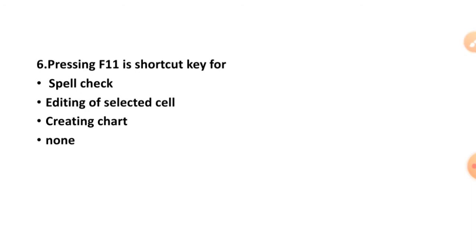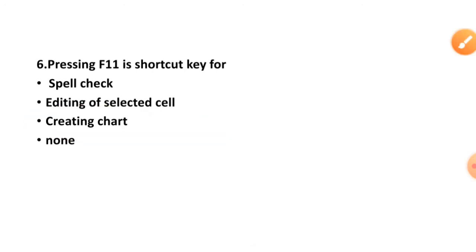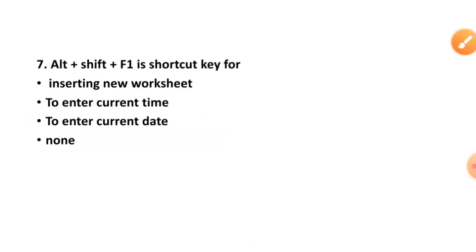Question number six: pressing F11 is a shortcut key for what? Spell check, editing of the selected cell, creating chart, or none? The correct option is option C, creating chart. Question number seven: Alt plus Shift plus F1 is a shortcut key for inserting new worksheet.